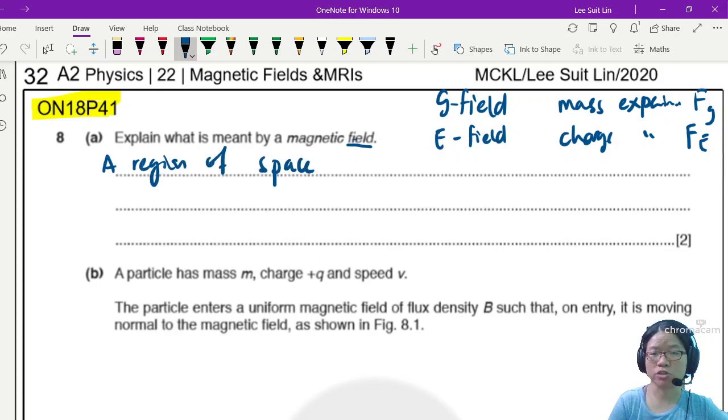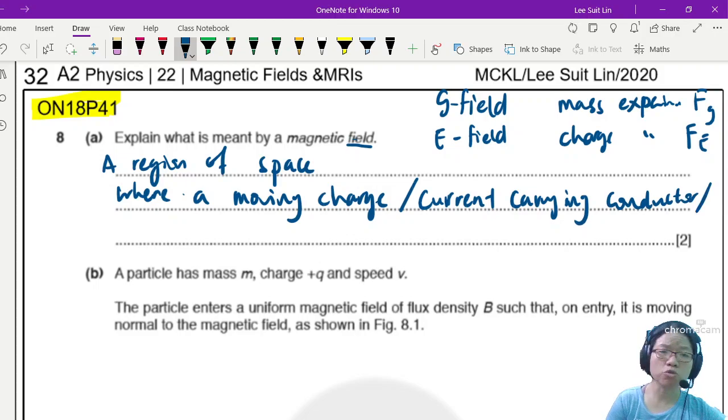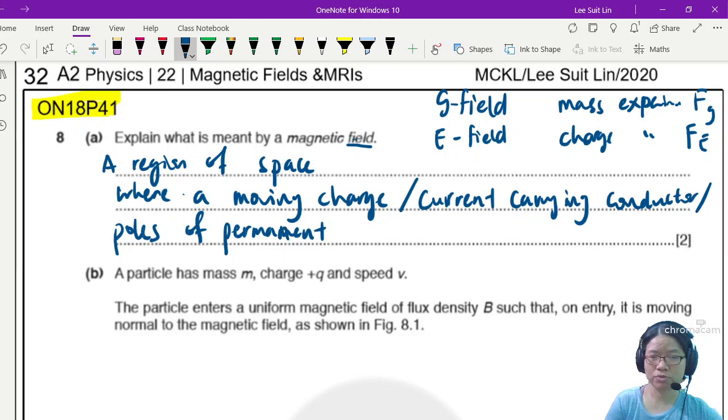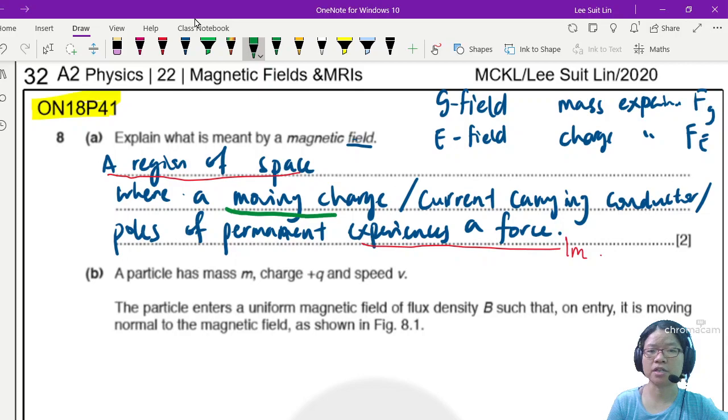For example, gravitational field is a region of space where mass will experience a gravitational force. Electric field is a region of space where charge experiences electric force. What about magnetic field? Also a region of space, but in this case, charge is not good enough. You need a moving charge, or a current carrying conductor, or poles of a permanent magnet. It's one mark for the condition.